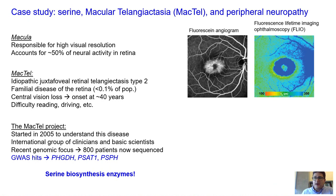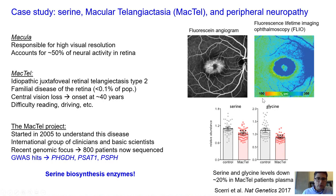There has been a heavy genomic focus over the years. In a study published before I was involved, Melanie Bahlo's group identified several GWAS hits focused on the serine biosynthesis pathway. They observed that serine and glycine were lower in MacTel patients compared to controls, raising the question: why are serine and glycine metabolically important?